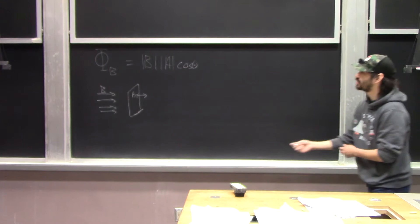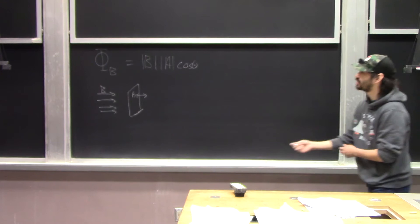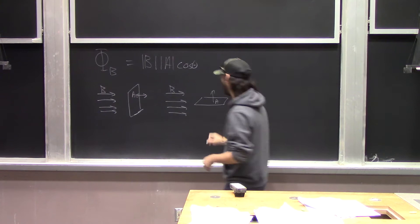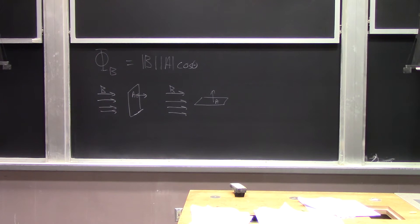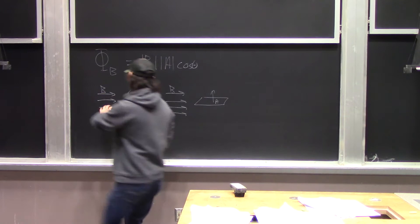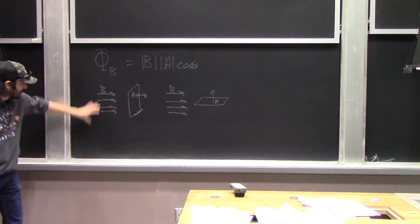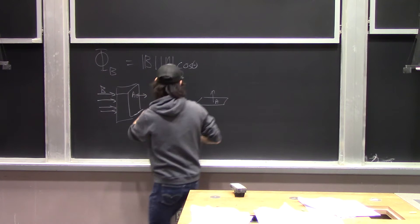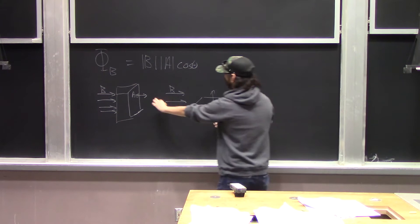When the magnetic field and the loop are oriented so the area vector and the magnetic field are perpendicular to each other, that minimizes the flux — cosine of 90° equals zero. Think of it like water flowing through a pipe: when the field lines go straight through the pipe opening, you get maximum flow; when they flow perpendicular to the pipe, no water passes through.